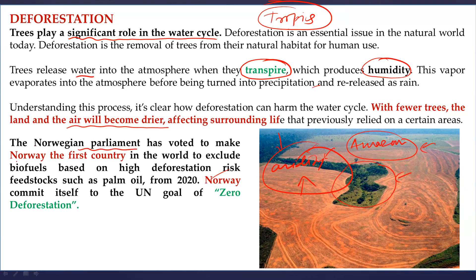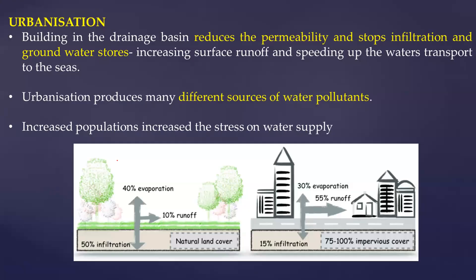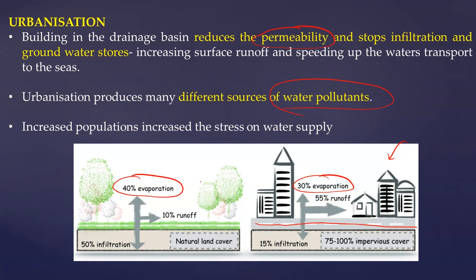Norway's parliament has voted to make Norway the first country in the world to exclude biofuels based on high deforestation risk, with a target of zero deforestation. Now, urbanization across the world is also a major issue. Urbanization reduces permeability because of construction — evapotranspiration patterns change significantly. Concretization of surfaces creates urban heat islands, and water pollutants are supplied from urban areas, creating a big problem.